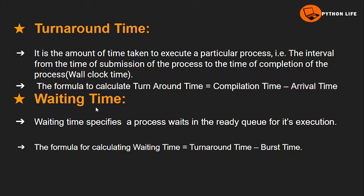The next criterion is waiting time. Waiting time specifies how long a process waits in the ready queue before getting the CPU for its execution. The waiting time formula is: waiting time equals turnaround time minus burst time, where burst time is the actual execution time of the process.